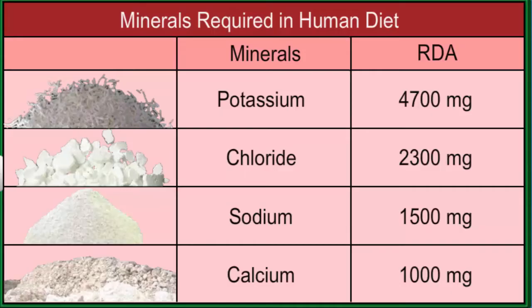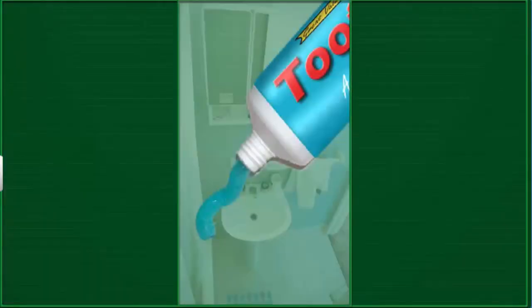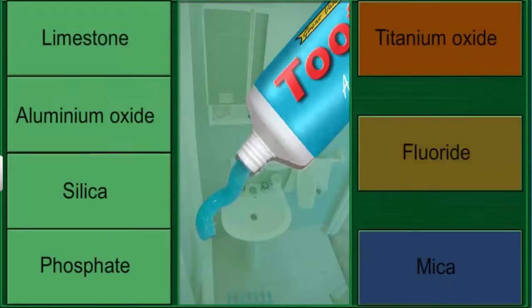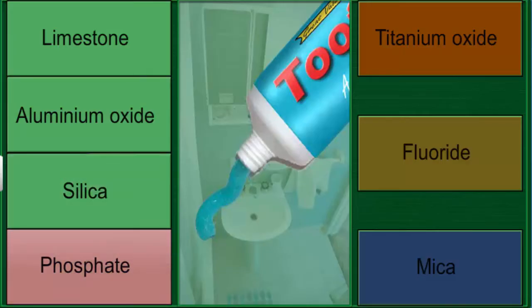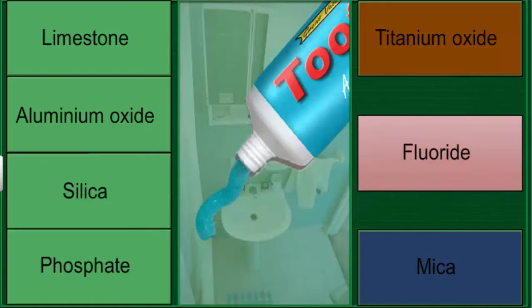You will be surprised to know how many different minerals you use in everyday activities. For example, brushing your teeth. The toothpaste you use contains limestone, aluminium oxide, silica and phosphate minerals for cleaning, titanium oxide for its white colour, fluoride to prevent cavities and mica for sparkle.